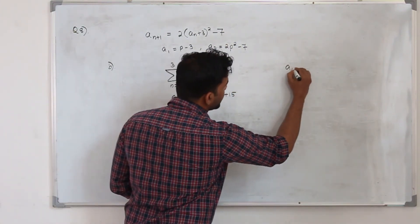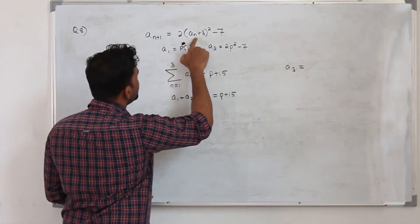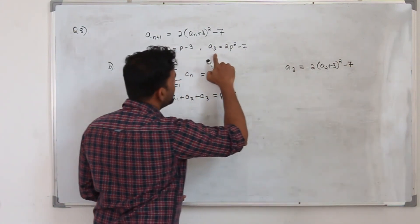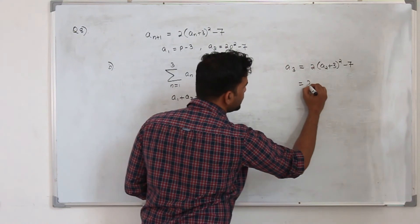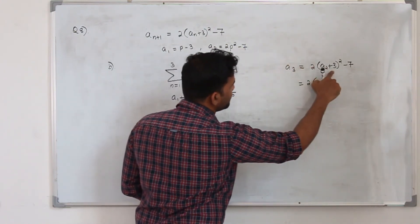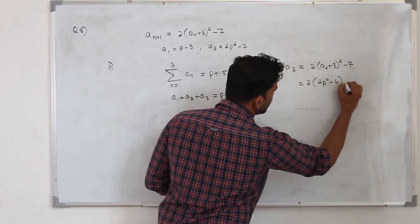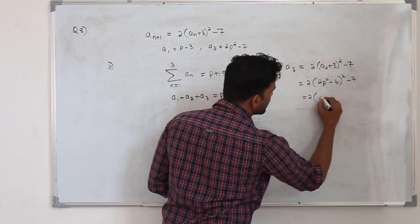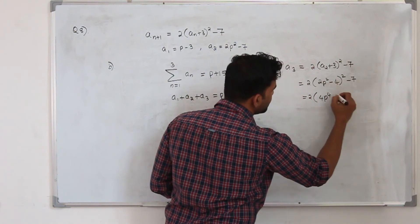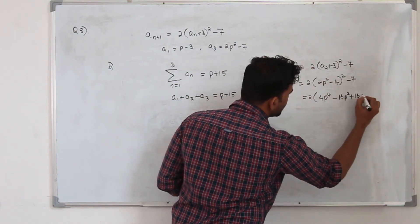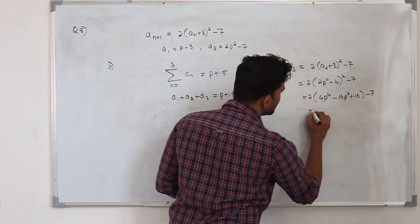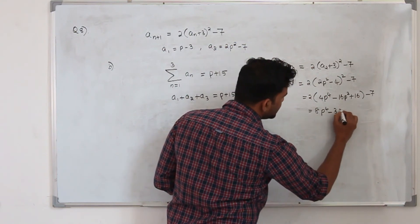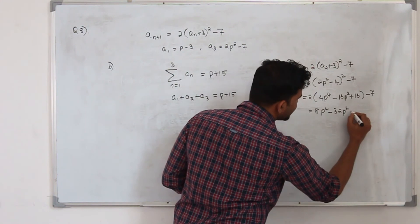Expanding 2(2p² − 4)² − 7 using (a − b)² = a² − 2ab + b²: 2(4p⁴ − 16p² + 16) − 7 = 8p⁴ − 32p² + 32 − 7 = 8p⁴ − 32p² + 25. Now substitute a₁ = p − 3, a₂ = 2p² − 7, and a₃ = 8p⁴ − 32p² + 25 into the equation a₁ + a₂ + a₃ = p + 15.